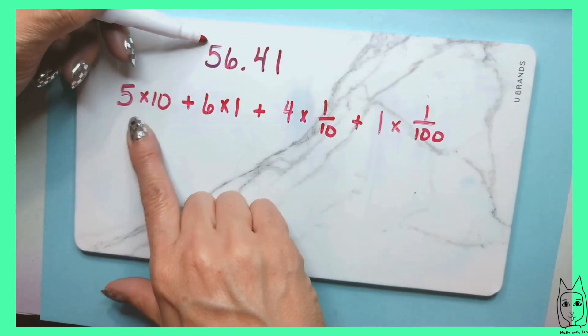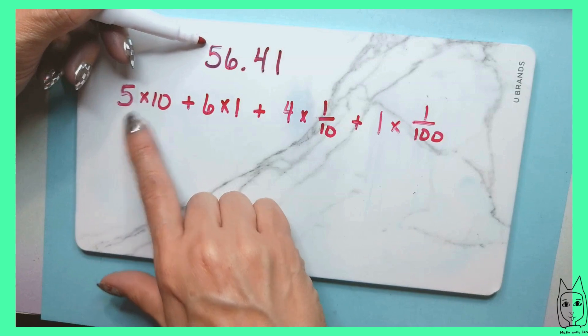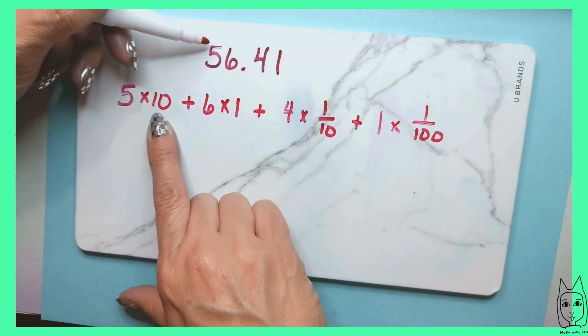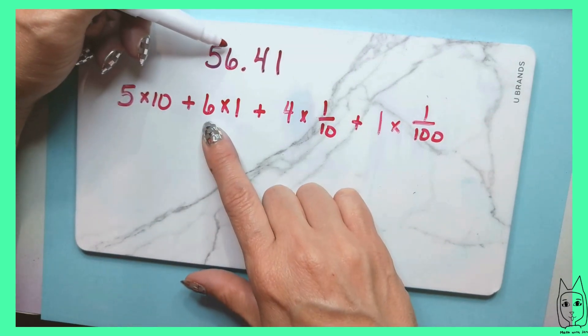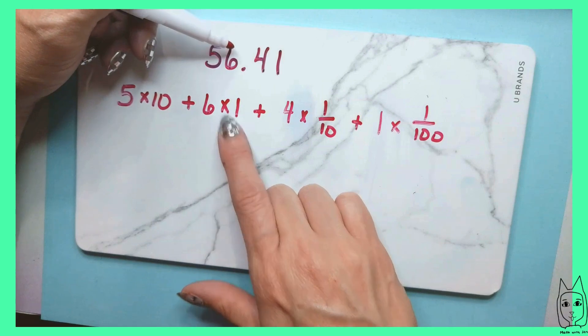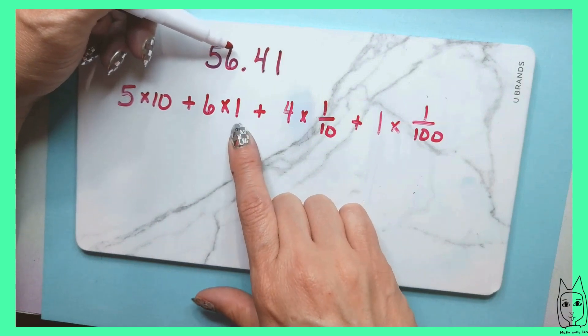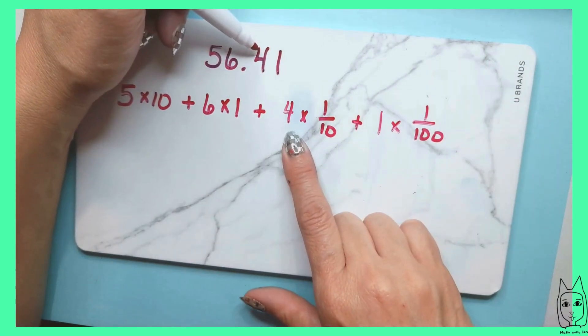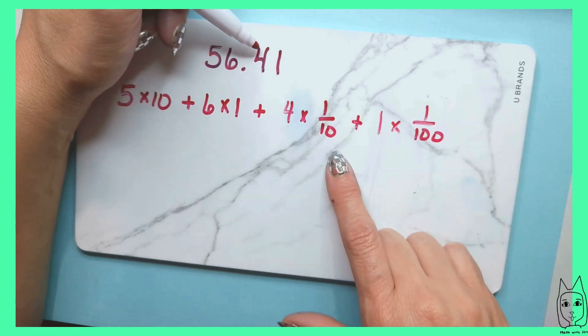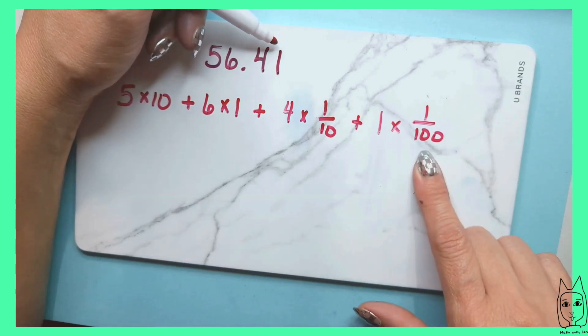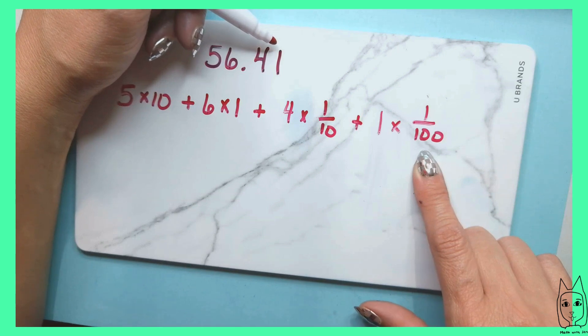Again, the five is for our tens place, so that's 5 times 10, because that's in the tens place. Six is in the ones place, so 6 times 1, because I have six of those ones. Four is in the tenths place, so I have four tenths, so 4 times one tenth. And then over here I have one hundredth, so 1 times one hundredth.